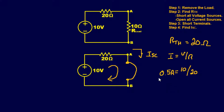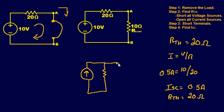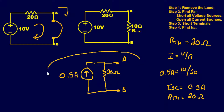Very simple. So we have our Norton current source of 0.5 amps and our Norton resistance of 20 ohms. Always note the current source direction. That will be our final answer for the Norton equivalent circuit.